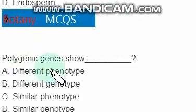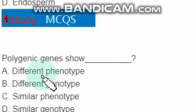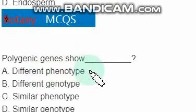Polygenic genes show different phenotypes — this is the right option, option A.